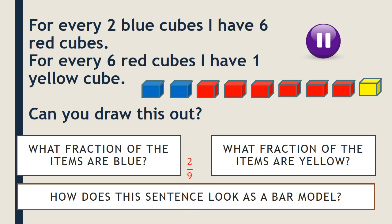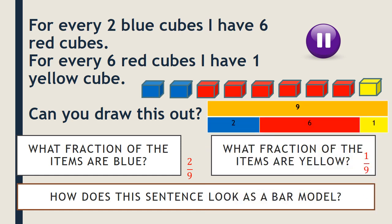What fraction of the items are blue? We've got nine cubes in total, so nine is our denominator and two is our numerator — two ninths. What fraction are yellow? One out of nine, so one ninth. We can't simplify either of those fractions. The bar model shows nine in total: two blue cubes, six red cubes, and one yellow cube — matching our sentence. Well done if you managed to draw that correctly.